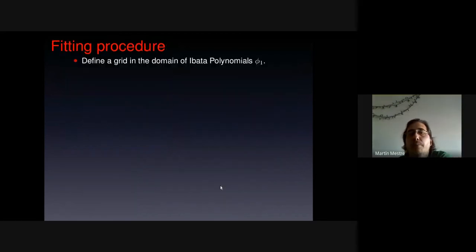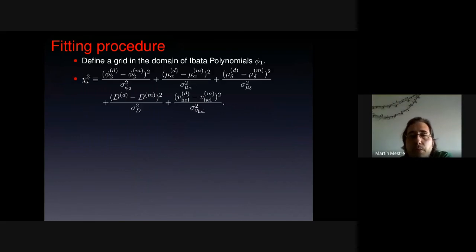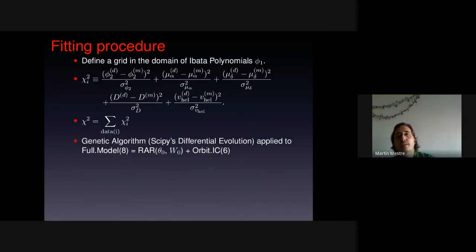Well, so we define a grid in the domain of Ibata polynomials. Phi1, we define the chi-square per each datum, which is the sum of the chi-squares associated to every coordinate. Phi1, position in the sky, proper motion in right ascension, in declination, and the distance, photometric, and the heliocentric velocity. We compute the total chi-square, and we use a genetic algorithm applied to the full model.